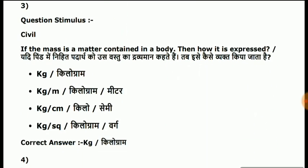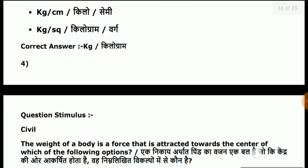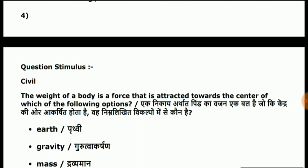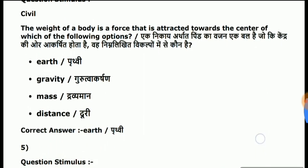Third question: if the mass is a matter contained in a body, then how is it expressed? Answer is kg. Fourth question: the weight of a body is a force that is attracted towards the center of which of the following? Answer is earth.